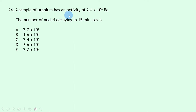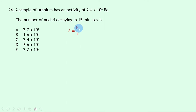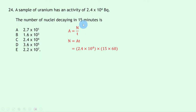Question 24: a sample of uranium has an activity of 2.4 × 10⁴ becquerels. Using A = N/T, rearrange to N = A × T = 2.4 × 10⁴ × (15 × 60) = 2.4 × 10⁴ × 900 = 2.2 × 10⁷. There are no units as it is a number of decays. The answer is E.